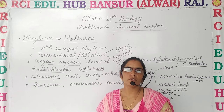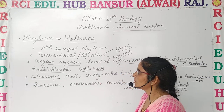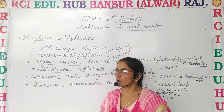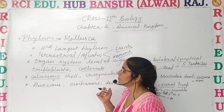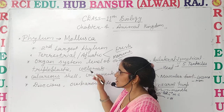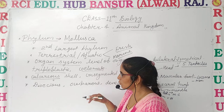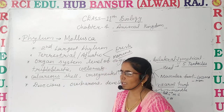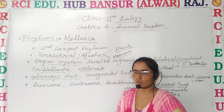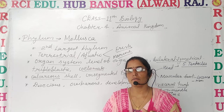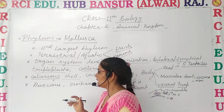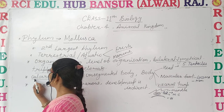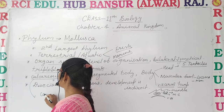They are coelomate, meaning a true body cavity is present in them. Now if we talk about the peculiar feature — because these are common features, pay attention to the peculiar features. Calcareous shell: these organisms live inside a shell, and that shell is made of calcareous material, meaning calcium. The shell is made of calcium, so it is hard.